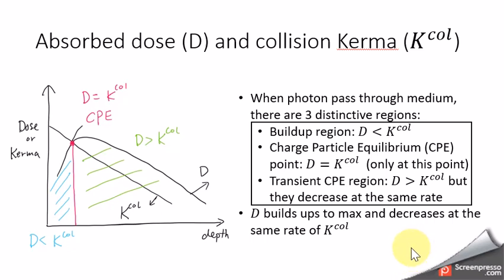And passing the CPE point, the region is called transient CPE region. This region represents where the absorbed dose is bigger than the collisional kerma, but they both decrease at the same rate.